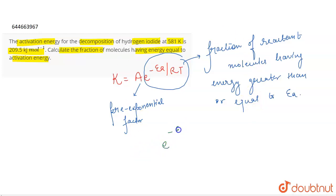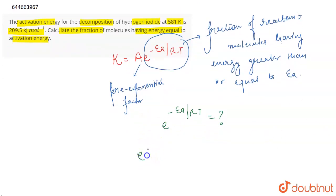So you have to find out the value of e to the power minus Ea by RT. So this is what is asked to you in the question. We have the value of Ea, which is given in kilojoules. We will